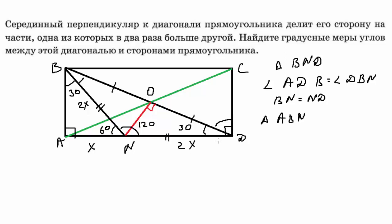Таким образом, один угол прямой, один — 30°, другой — 60°. Мы ответили на вопрос: найдите градусные меры углов между диагональю и сторонами прямоугольника. Ответ: 30 градусов и 60 градусов.